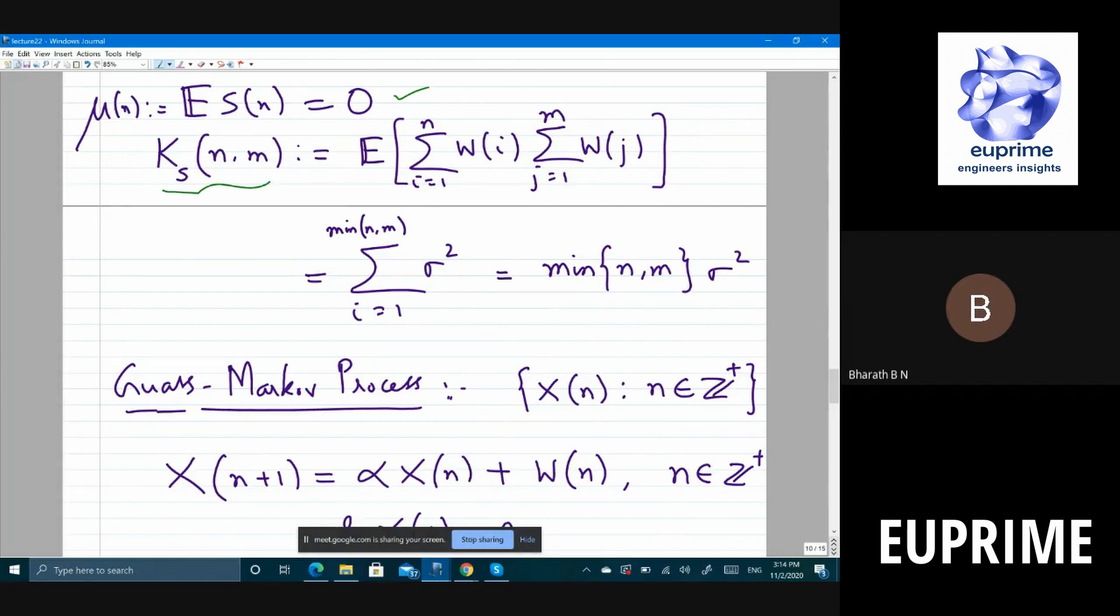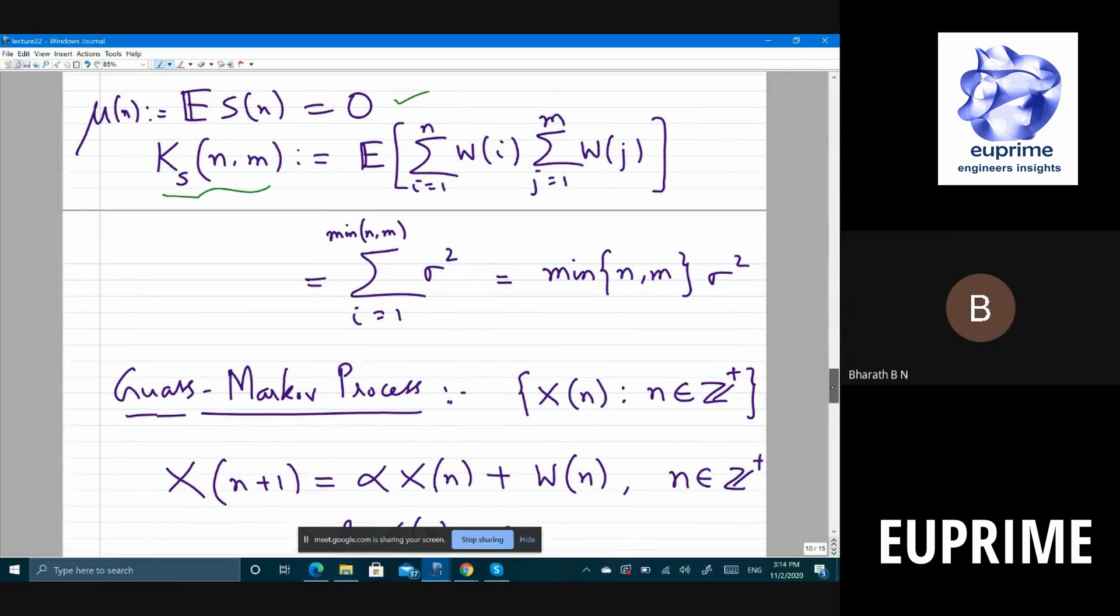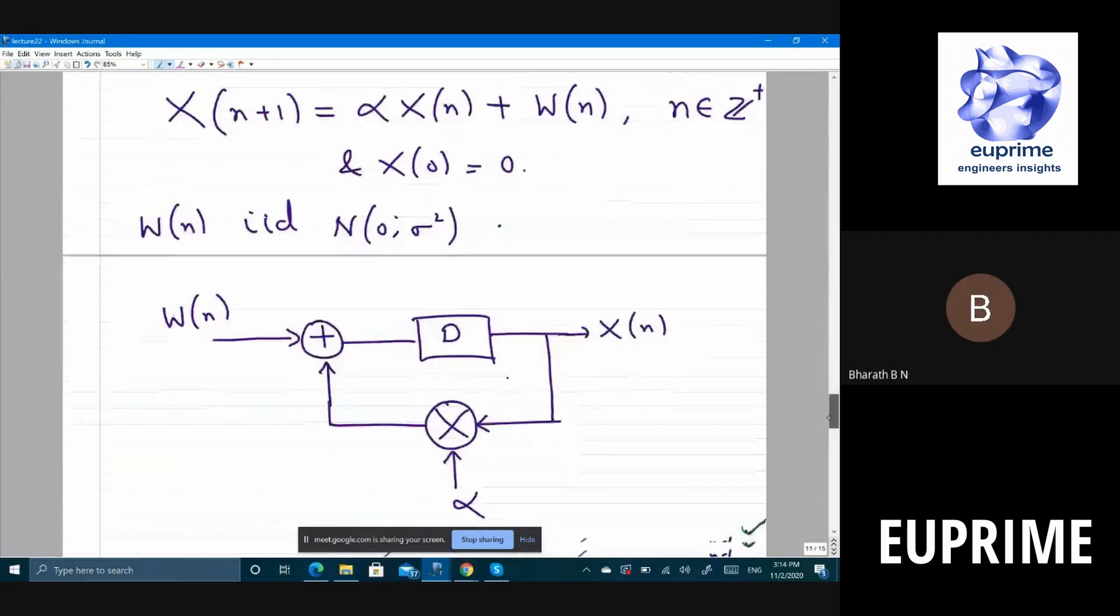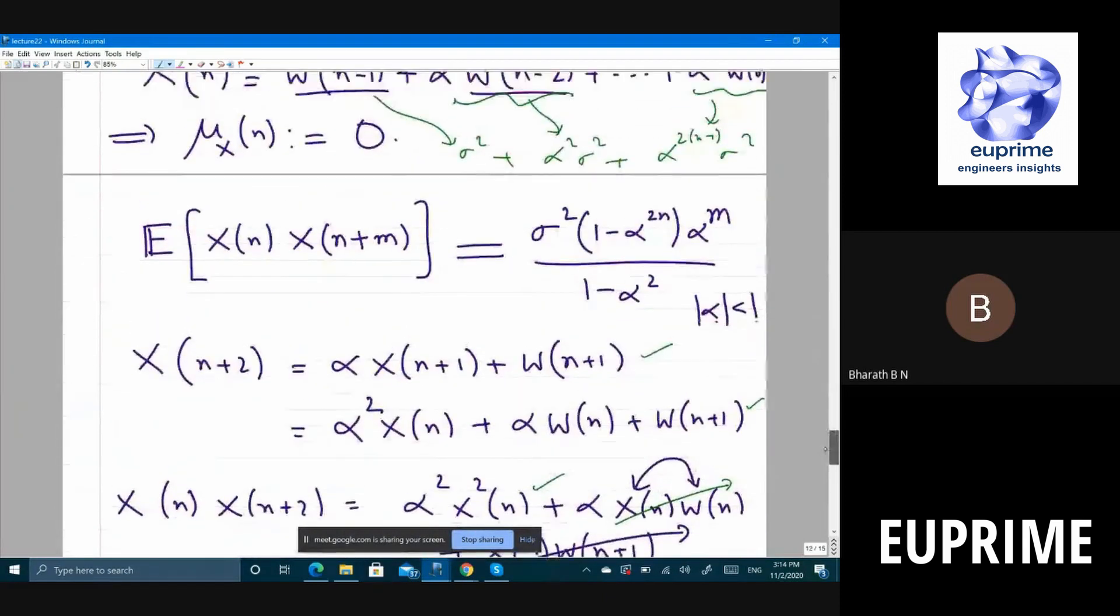It doesn't depend on the difference; rather it depends on the minimum, so it's not a stationary stochastic process. What about the Gaussian process? Is it stationary? Can you see if it's stationary or not?